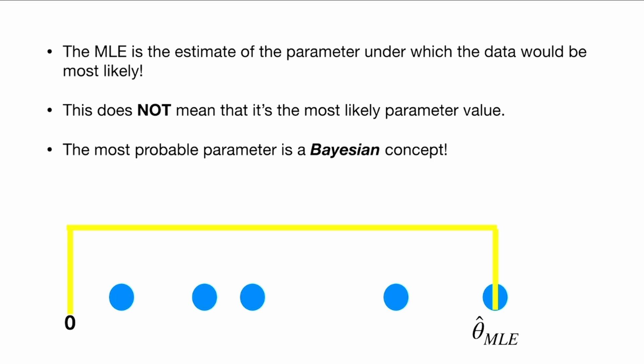We can't even talk about what it means to be the most likely parameter value. The maximum likelihood just finds the value that maximizes the likelihood. That's it.